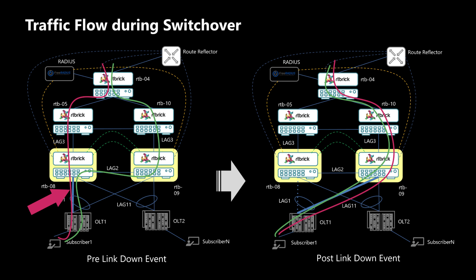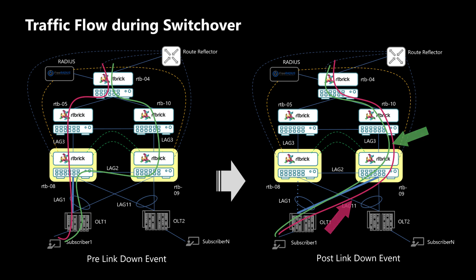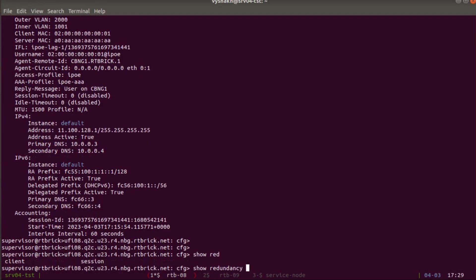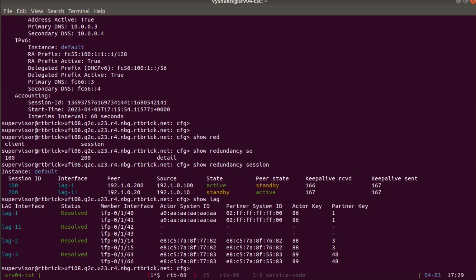Looking at the traffic flow: upstream traffic is marked in red — it comes from the OLT to the active node and then upstream. Downstream traffic can land on both standby and active nodes; if it lands on the standby node it is redirected to the active node and then to the subscriber. We will now shut down one of the links in LAG1 — the link connecting BNG and OLT — and see whether the subscribers active on RTB08 get taken over by RTB09. After the event, both upstream and downstream traffic should take the new path.